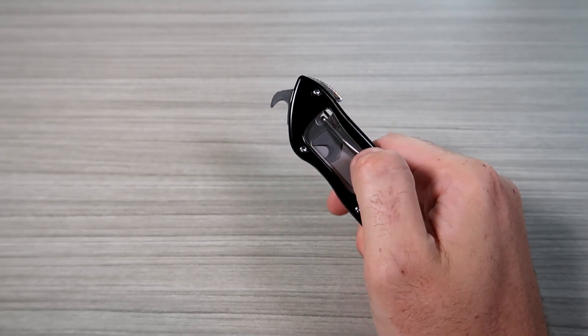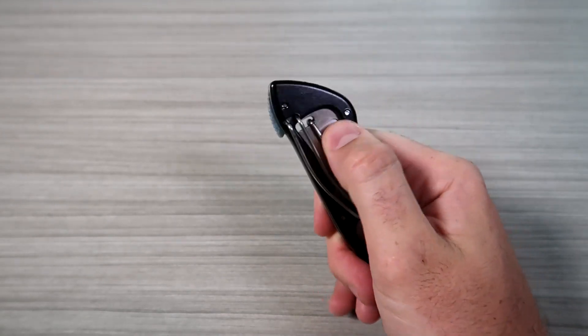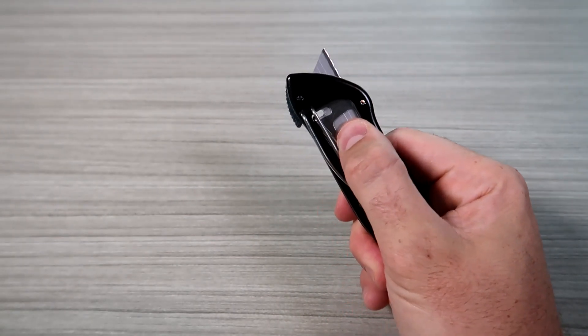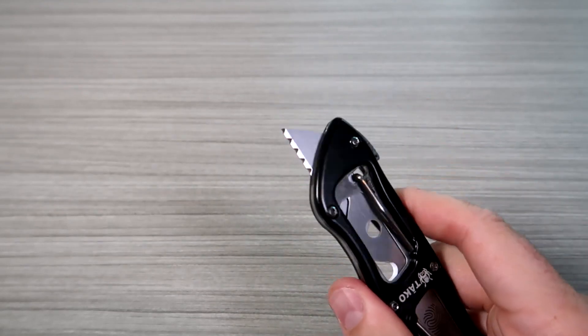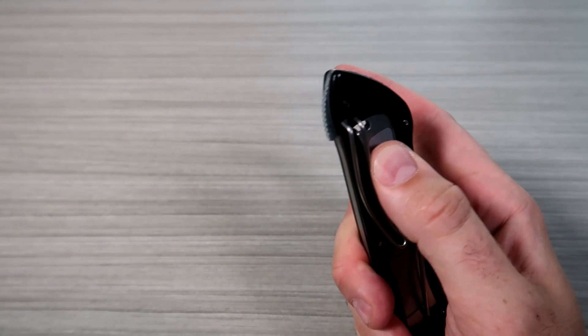And if you need it bigger, lock it this way, and then gravity falls. Then same thing here. Just press it and lift it. Need it bigger, lock it. You see this one is more of a serrated blade. And then gravity falls.